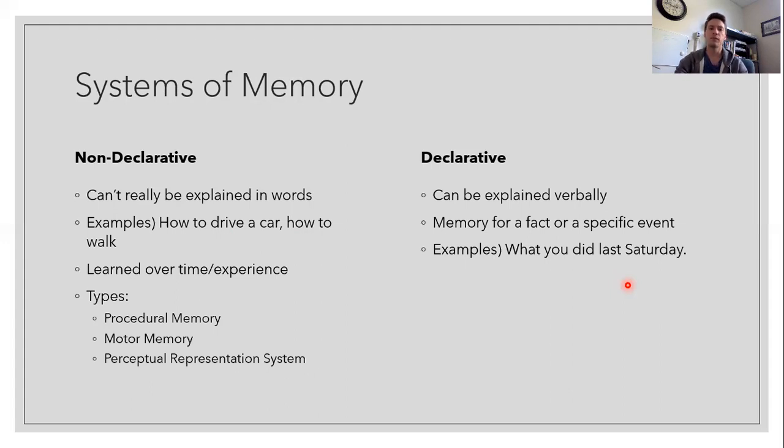For declarative memory, these are the more advanced systems of memory: semantic memories, working memory, and episodic memory.